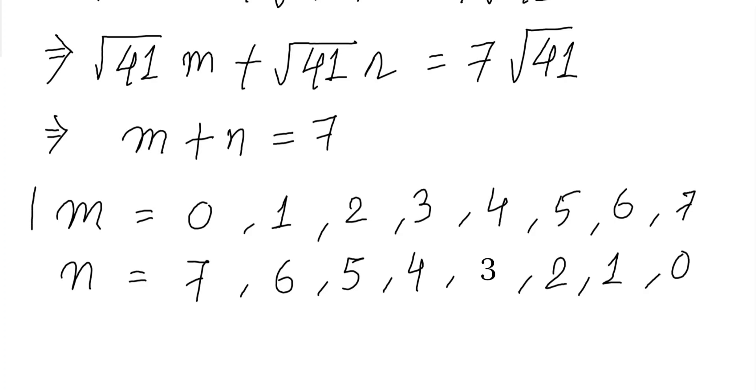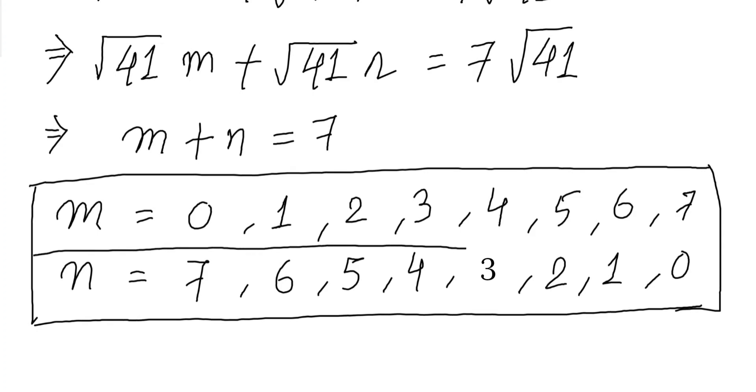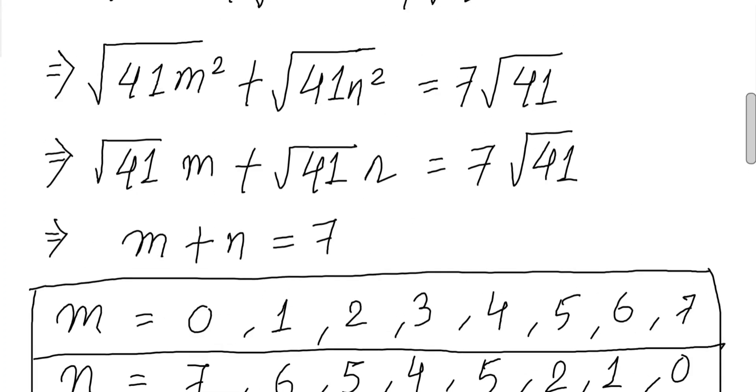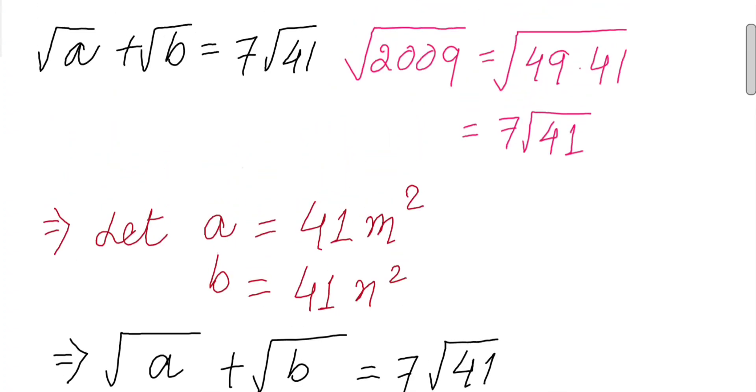These are all possible values that if you substitute in the above equation, you will get a solution. This is our all possible combination of solutions. Remember, m and n cannot be negative, so there are 7 distinguished pairs of solutions. Thanks for watching, see you next time.